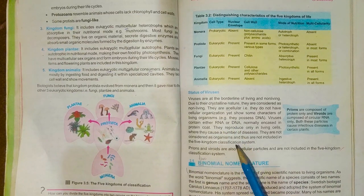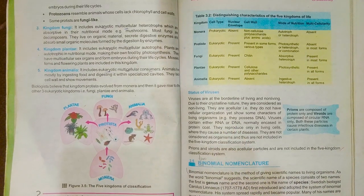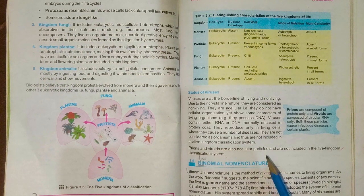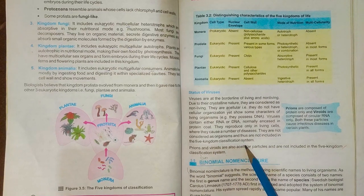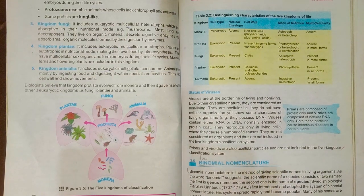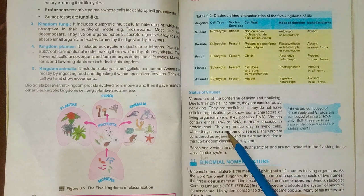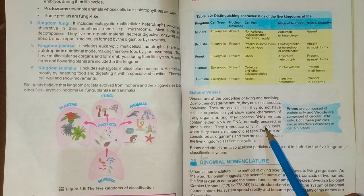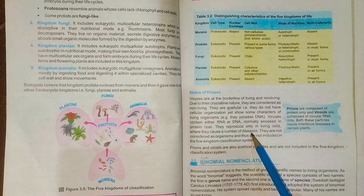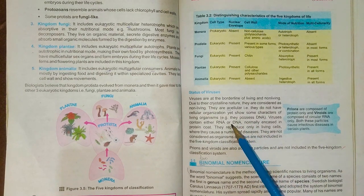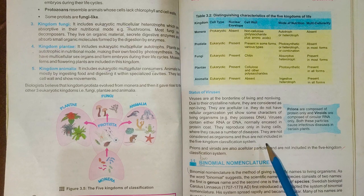Status of virus — this is very important because it also appears in chapter four as a short question: how are viruses acellular, and why are viruses not included in the five kingdom classification system? The correct answer is that a virus is both living and non-living — when it enters an organism it becomes living and causes diseases there.